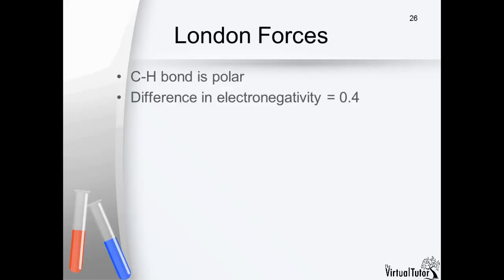This is because there is a difference of 0.4 in the electronegativity of a carbon atom and the electronegativity of a hydrogen atom. Carbon is more electronegative than hydrogen and therefore it attracts the shared pair of electrons more strongly.